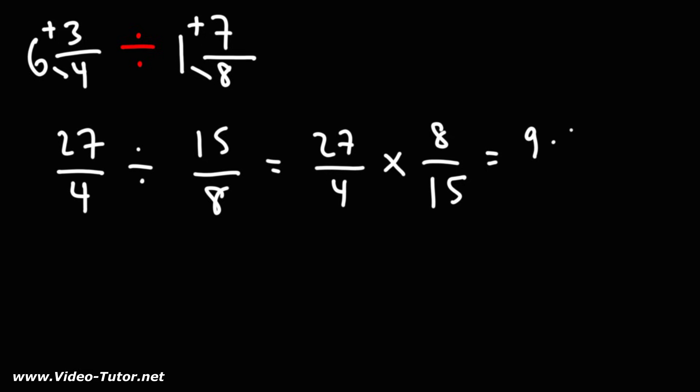So 27, I'm going to write that as 9 times 3, and 4, I'm going to leave that as 4 times 1. 8, I'm going to write that as 4 times 2, and 15 as 3 times 5. So we could cancel a 4, and we could cancel a 3.